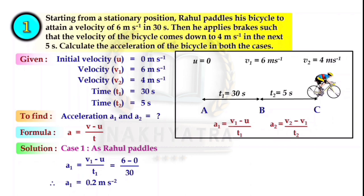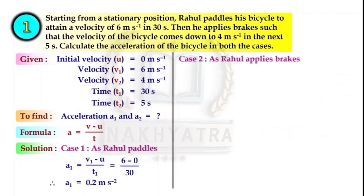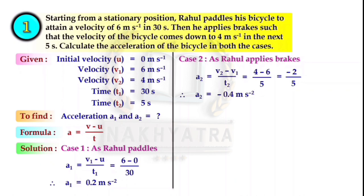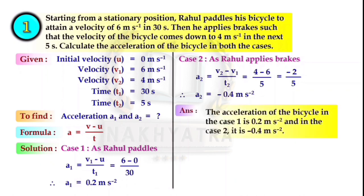Don't forget to write the unit. For the second case, as Rahul applies brakes, A2 = (V2 - V1)/T2. Putting the values, we get A2 = -0.4 meter per second square. So the acceleration in case 1 is 0.2 m/s² and in case 2 it is -0.4 m/s².